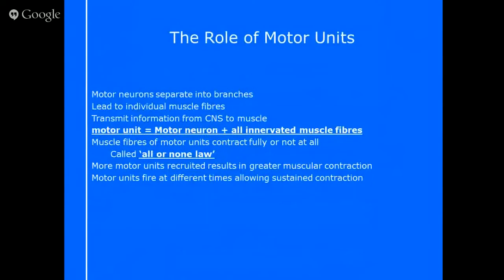The motor neurons separate off into branches which lead into the muscle fibres. As information is transmitted from the CNS to the muscle using the motor neuron, it breaks off and joins onto the muscle itself. As a motor unit, the whole motor neuron plus the innervated muscle fibres work together — the electrical transmission stimulates that muscle fibre to contract. Within that muscle fibre, all of the myofibrils, the sarcomeres, and then the actin and myosin activate to cause the contraction.